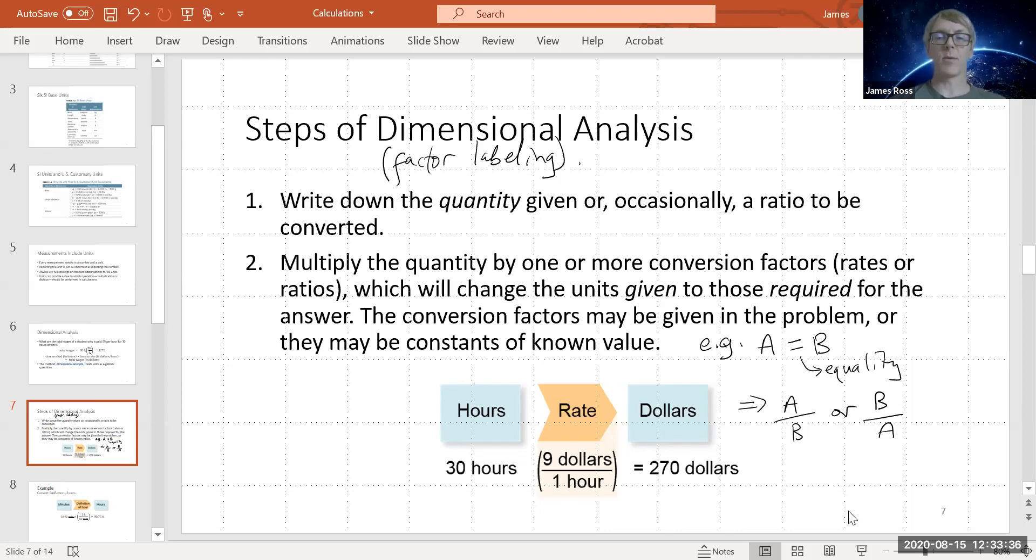For example, if we look at this specific question here, which is a non-chemistry example, if I interpret this question at the bottom, it says 30 hours at a rate of $9 an hour is $270. So a question might be, if I get paid $9 an hour and I work for 30 hours, how much money am I going to take home?